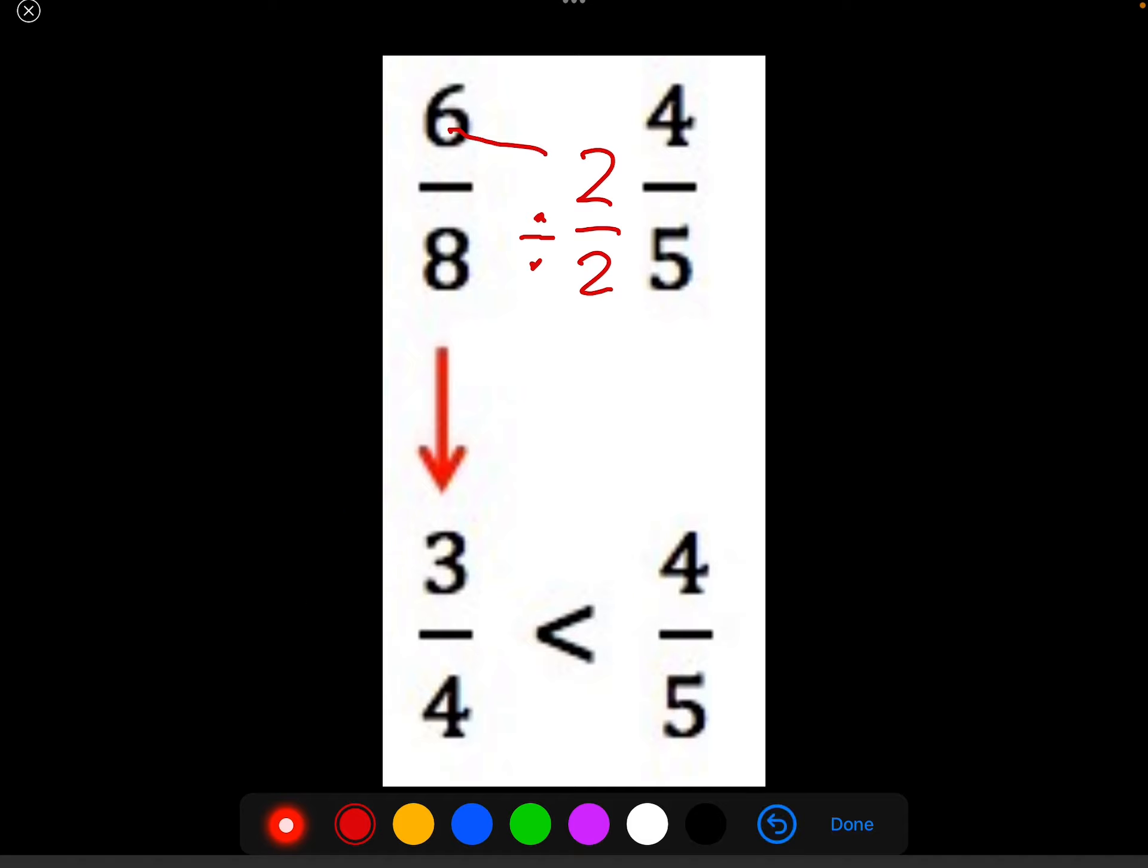So now we have 3/4 is less than 4/5, because the 4/5 would be smaller pieces, but there's more of them, versus the 3/4, you would have basically one of those cut in half. So that's how I would solve this one.